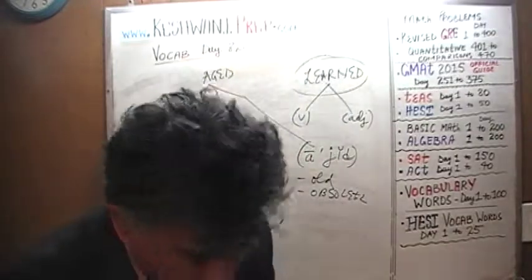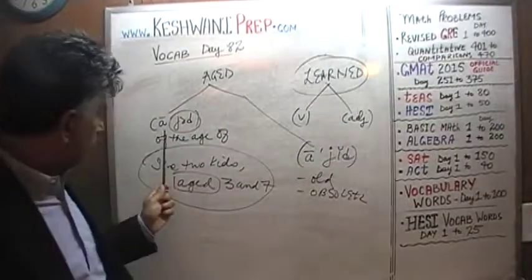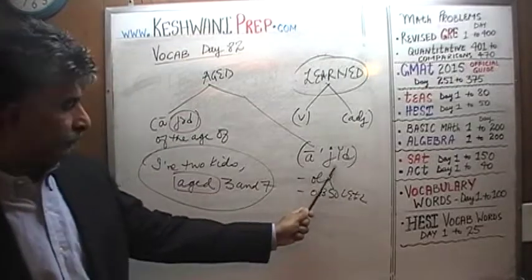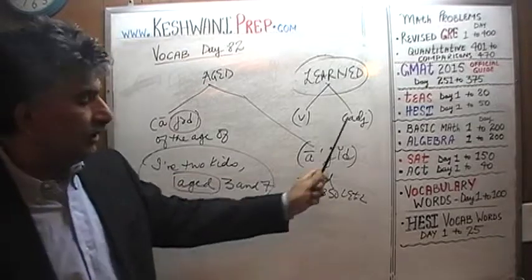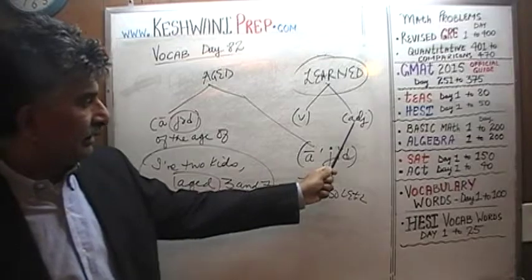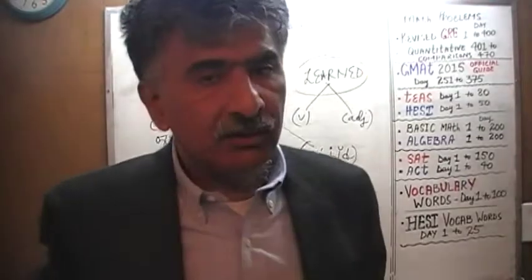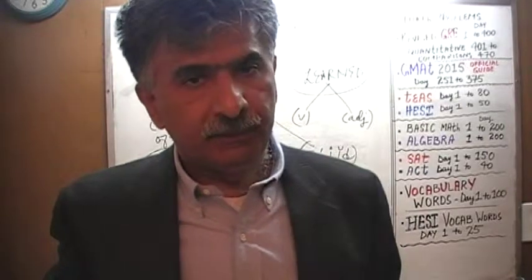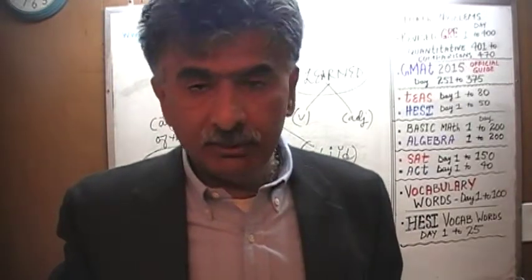Just like 'learned' and 'learned' — 'aged' and 'aged.' 'Learned' is simply the past tense of 'learn,' while 'learned' means you are scholarly, well-read, you know a lot, you have a lot of knowledge. For example: 'Michael is learned.' In that context we will not say 'learned' — we say 'learned.'